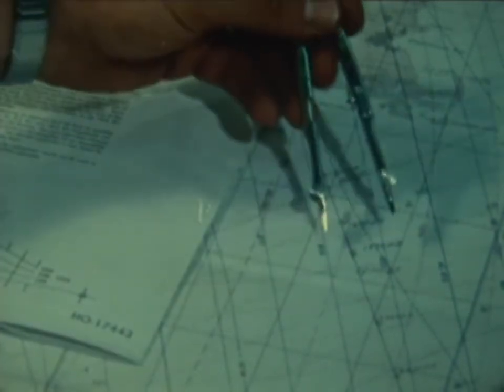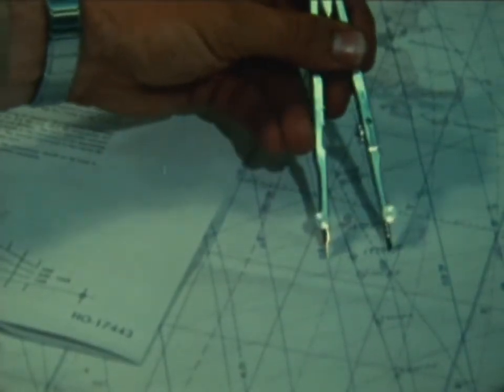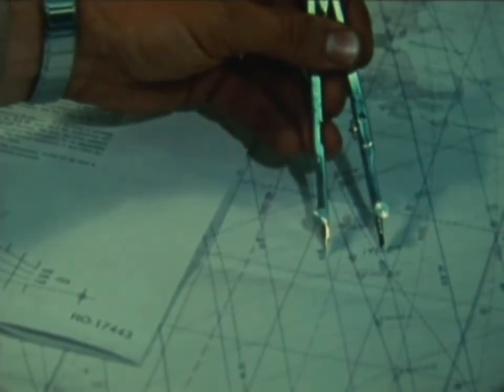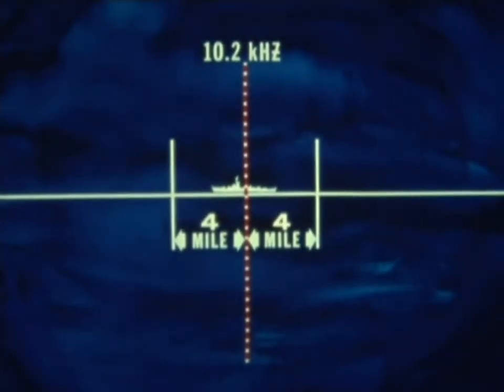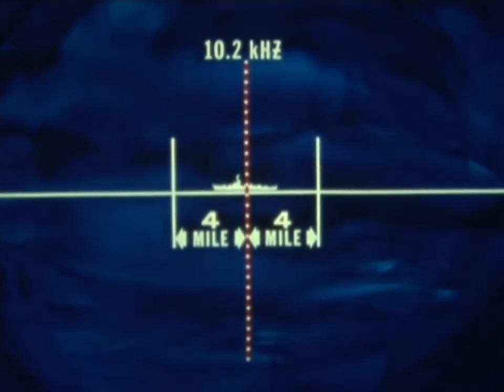In order to re-initialize the receiver after a loss of lane count, the ship's position must be known within a half-lane width, which, using the 10.2 kilohertz signal, would be plus or minus four nautical miles.